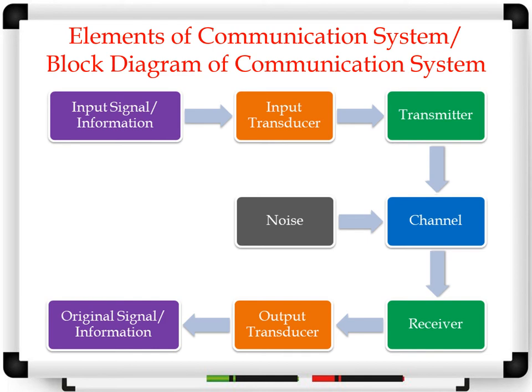Now, the elements of the communication system. Here we discuss the electronic communication system. This is the block diagram of the communication system. We will see the different blocks in detail in the next slides. These blocks are: input signal (that is information), input transducer, transmitter, channel, receiver, output transducer, and at the end we get the original signal, that is information. Meanwhile, noise can affect the information traveling through the channel. Let us discuss this block diagram in detail, one by one.